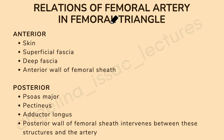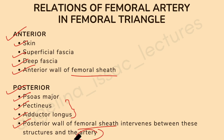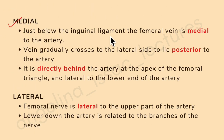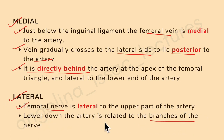To summarize the relations of the femoral artery in the femoral triangle: anteriorly, it is related to the skin, superficial fascia, deep fascia, and anterior wall of the femoral sheath. Posteriorly, it is related to the psoas major, pectineus, adductor longus, and the posterior wall of the femoral sheath. Medially, just below the inguinal ligament, the femoral vein is medial to the artery, crossing to lie posterior at the apex of the femoral triangle. Laterally, the femoral nerve is lateral to the upper part of the artery; lower down, the artery is related to the branches of the femoral nerve.